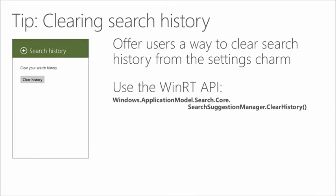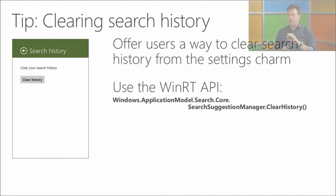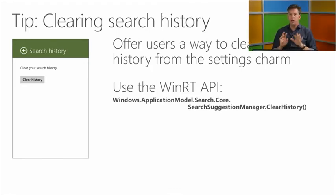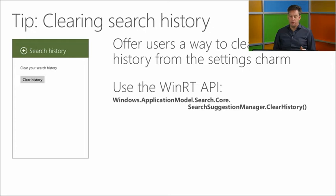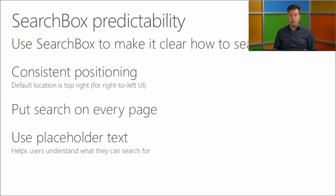Clearing search history: the first item in the search box control dropdown is search history, managed by the operating system. Provide users a way to clear that history — they may have done searches they're no longer interested in. Add a 'clear history' button in your app's settings. The API call to do this removes the history from the system.